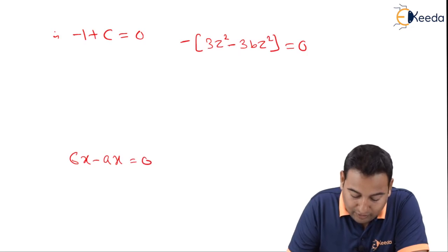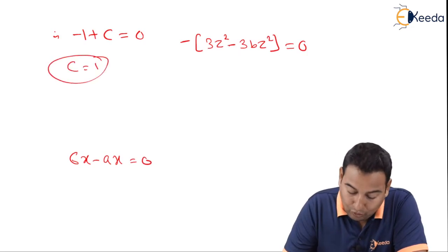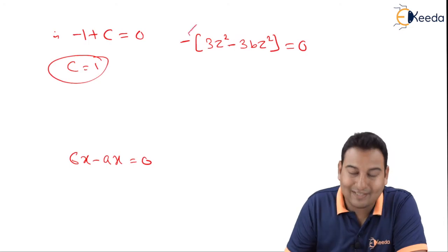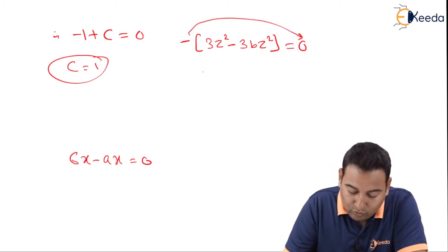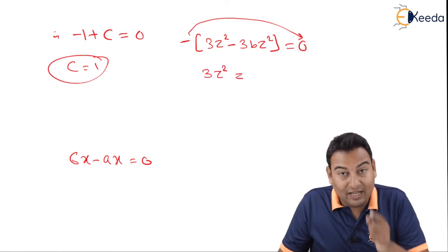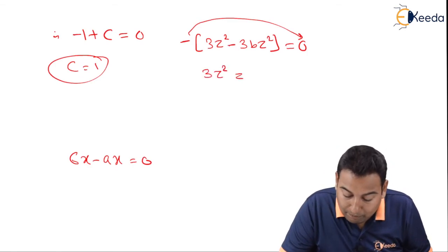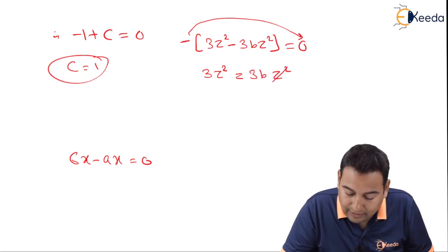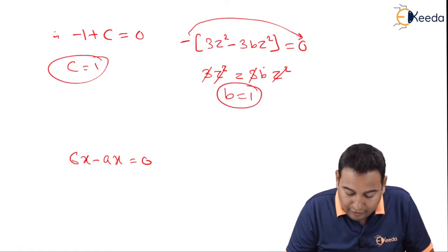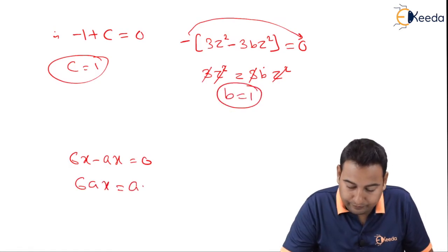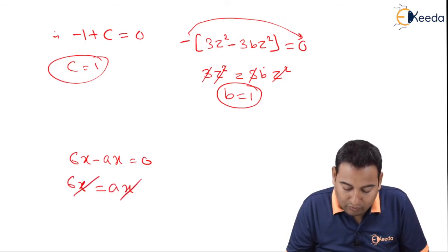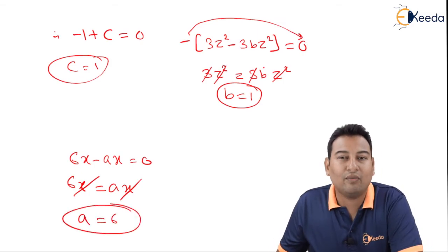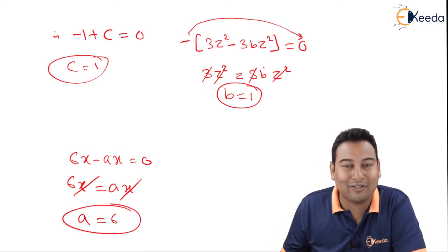Let's simplify this. This is very simple. C equals 1. From the j equation, 3z squared equals negative 3bz squared. Moving to the other side, 3z squared equals 3bz squared. Cancelling z squared and 3, B equals 1. From 6x equals ax, cancelling x, A equals 6. We needed to find the values of A, B, C. We got it. Hope you understood, thank you.